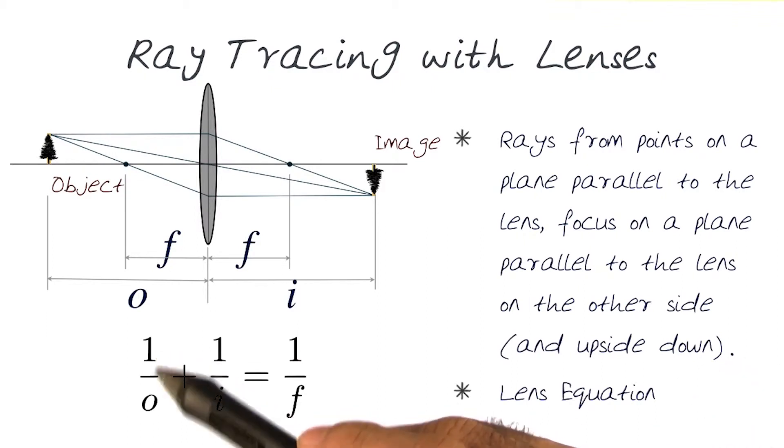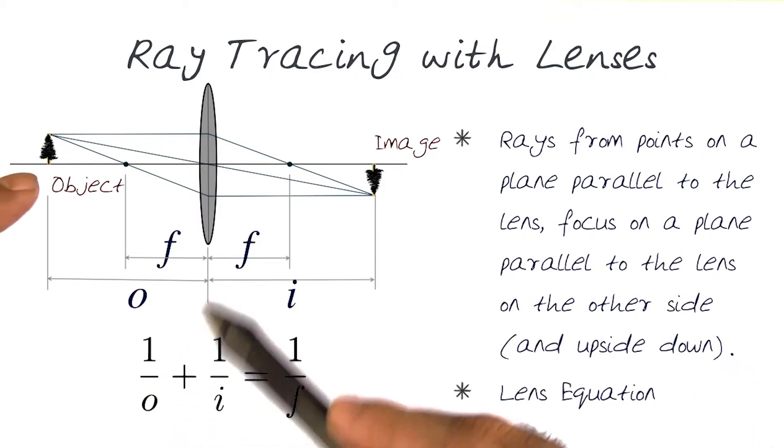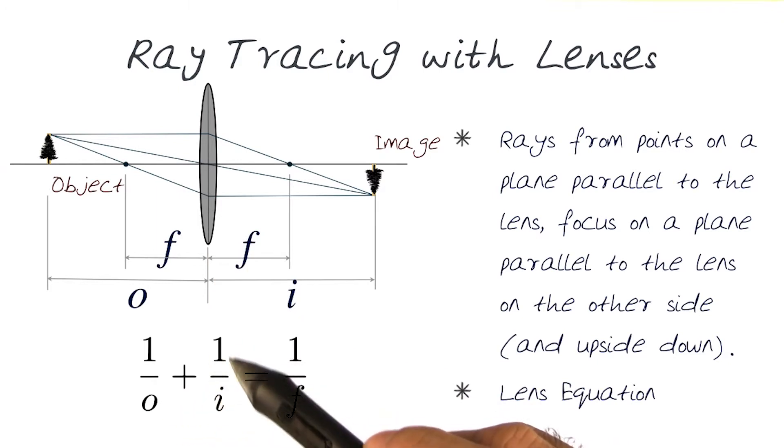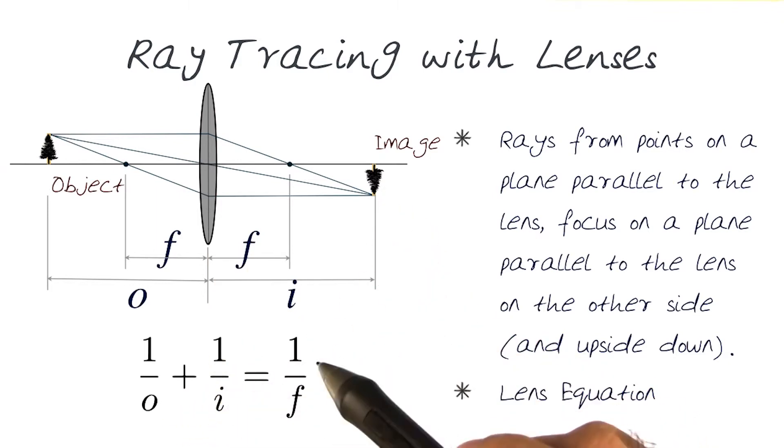And mathematically, it's 1 over the distance of the object from the lens plus 1 over the distance of the image from the lens is equal to 1 over the focal length.